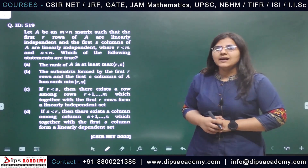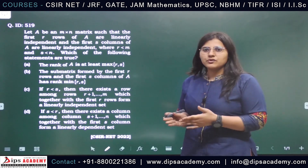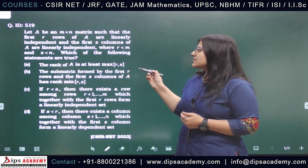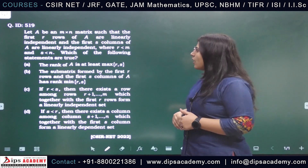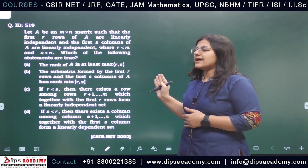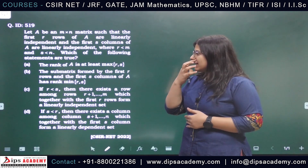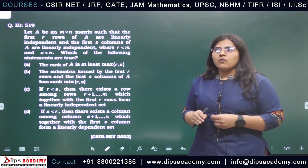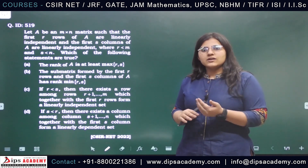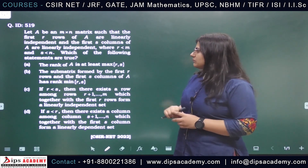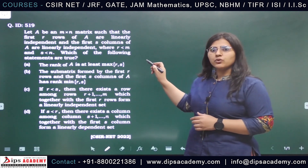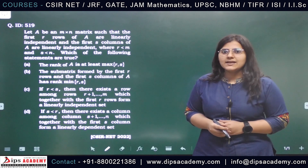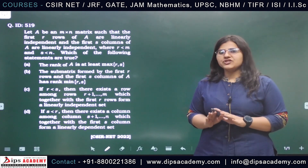Let's start with the question. We have an M×N matrix A in which the first R rows are linearly independent and the first S columns are linearly independent. Also, R is strictly less than M and S is strictly less than N — that is, we are not talking about the whole matrix. We don't know anything about the remaining rows and columns of matrix A. We need to find out which of the four statements are correct. Since this is a multiple select question, we have to work out each and every option.